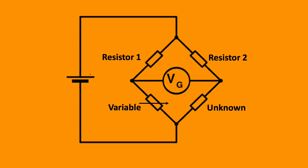The Wheatstone bridge is configured to measure small variations in resistance. It is composed of two known resistors, one unknown resistor, one variable resistor, a central galvanometer, and a power supply. It adjusts the variable resistor until the current detected by the galvanometer drops to zero — this occurs when the variable resistor matches the unknown resistance, allowing the unknown resistance to be determined.